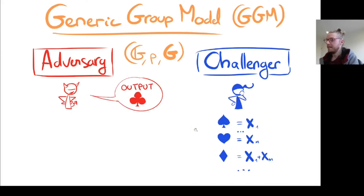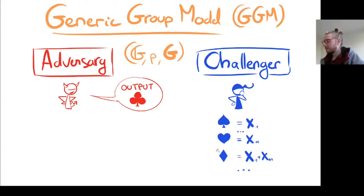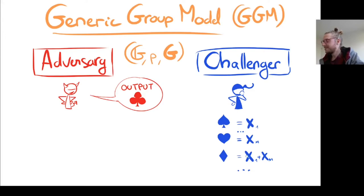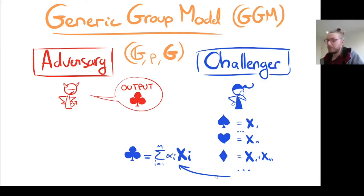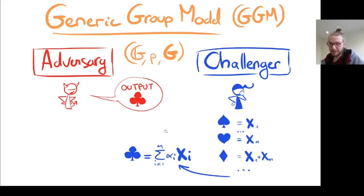The challenger checks in the list which group elements ♠ and ♥ correspond to and computes their sum. If the resulting group element was already in the list, the challenger gives the existing symbol; if it is new, a new symbol is assigned. In the end, if the adversary outputs a group element, it must be a symbol the challenger already answered, so the challenger can recover the decomposition — all symbols correspond to linear combinations of the inputs.